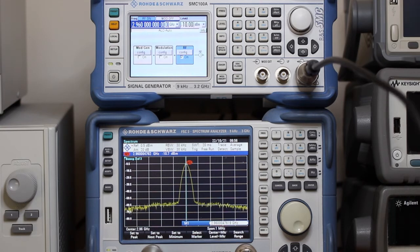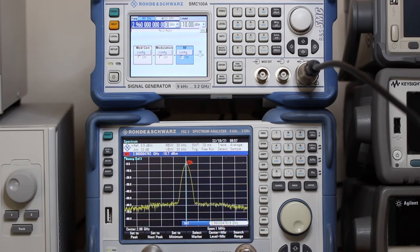2.96 GHz is the 37th harmonic of 80 MHz square waves, so we can say that the cables are good enough for this model I bought.